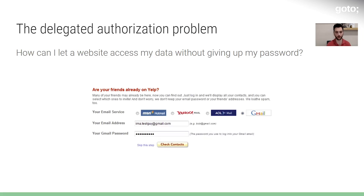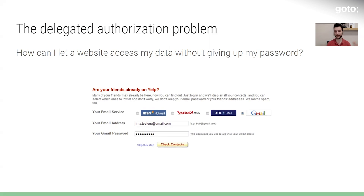To do that, we have to go back in time. Before OAuth existed, maybe 10 or 15 years ago, there was a problem called the delegated authorization problem — how do I let my website talk to another website so they can share some of my information, but I don't want to give my password out everywhere? To be clear, I'm talking about totally legitimate sharing of your data, like sharing photos with a printing service or sharing contacts with a service to find your friends.